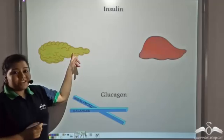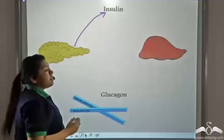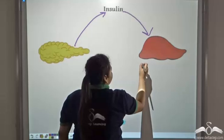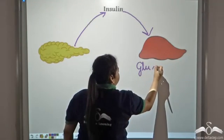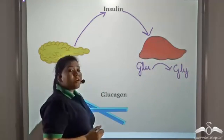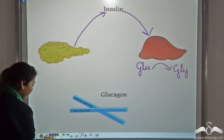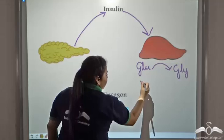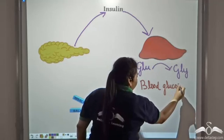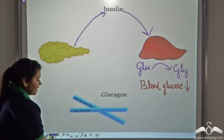So the pancreas secretes insulin. And the insulin causes the conversion of glucose to glycogen in the liver. Now because of this conversion, the blood glucose level decreases.